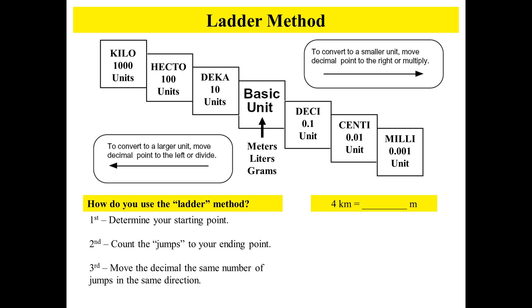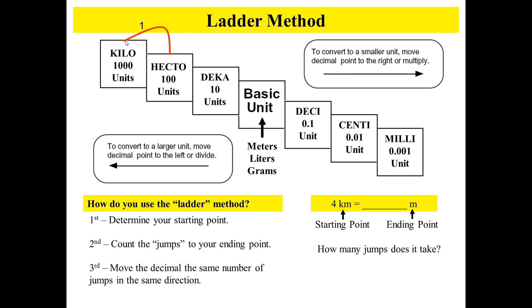Thank you Hamad. This is Mr. Robert again, and I am going to show you how to use the ladder method to convert from kilometers — that's our starting point — to meters, the ending point right here at the basic unit. You first need to determine how many jumps. How many jumps? Three. That's right — one, two, three. So 4 kilometers equals 4,000 meters. Three jumps.